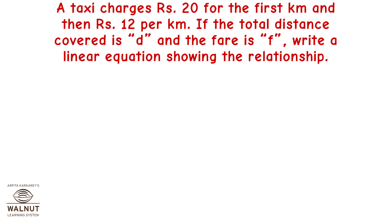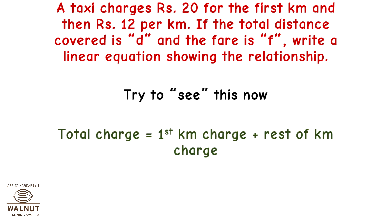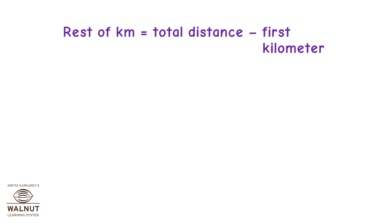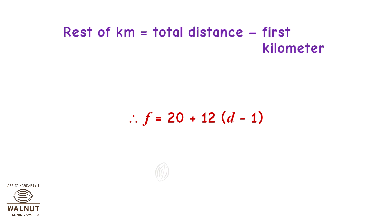A taxi charges Rs. 20 for the first kilometre and then Rs. 12 per kilometre. If the total distance is D and the fare is F, write a linear equation. Total charge = first kilometre charge + rest of kilometres charge = 20 + (D - 1) × 12. Therefore, F = 20 + 12(D - 1).